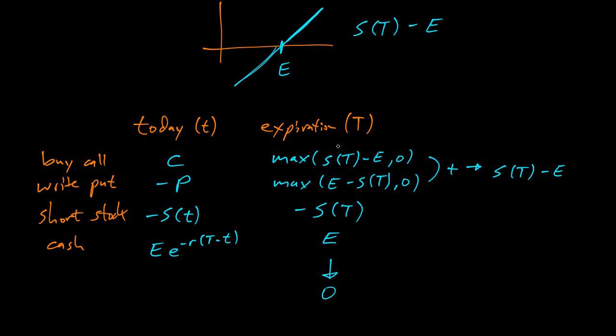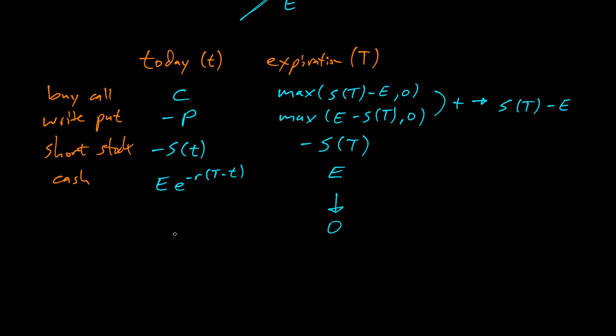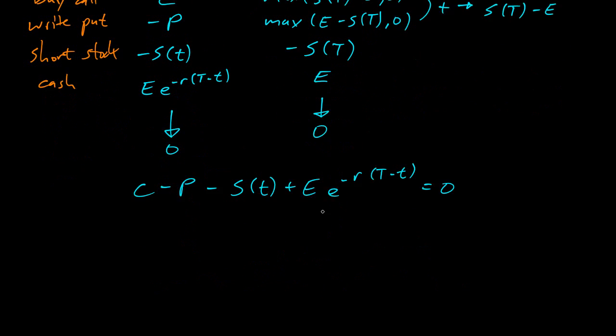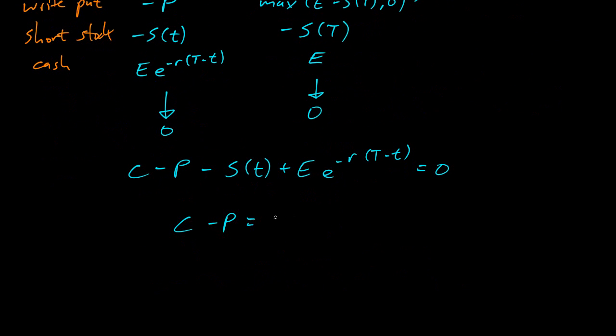By the no arbitrage argument, the cash flows are known and zero at expiration. Therefore, the cash values have to be known and zero today. C minus P minus S of t plus E e to the negative r times T minus t equals zero. Or equivalently, C minus P equals S of t minus E e to the negative r times T minus t.